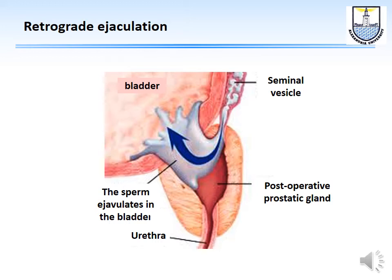Retrograde ejaculation can occur due to diabetes or operations at this level — for example, prostatectomy or bladder dilatation affecting nerve supply. During ejaculation, sperm travels retrograde into the bladder rather than into the urethra. If the man urinates after the sexual act, sperm will be found in his urine.